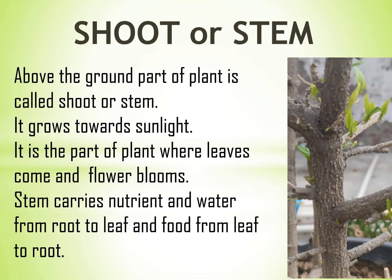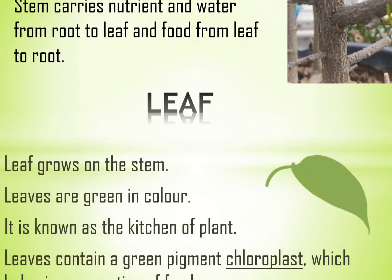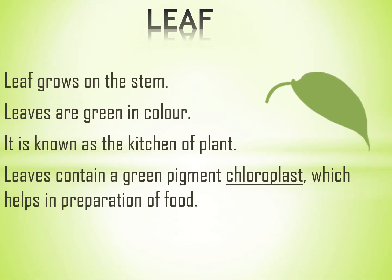Leaf. Leaf grows on the stem. Leaves are green in color. It is known as the kitchen of the plant. Leaves contain a green pigment chlorophyll which helps in the preparation of food.